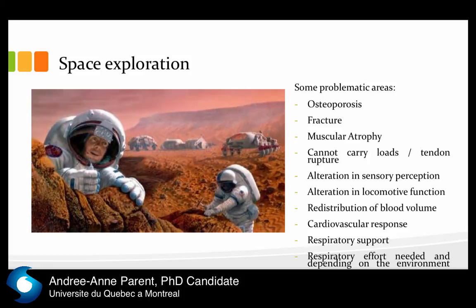We don't yet have sufficient countermeasures, so you have to think about this. If there's no efficient human countermeasure in space, you need an exoskeleton to provide structural stability and ensure astronauts don't fall or have problems transitioning — for example, moving from the exoskeleton to the bed or into the spacecraft.